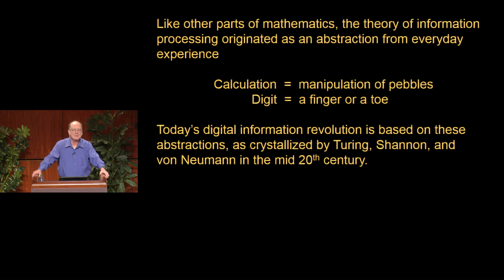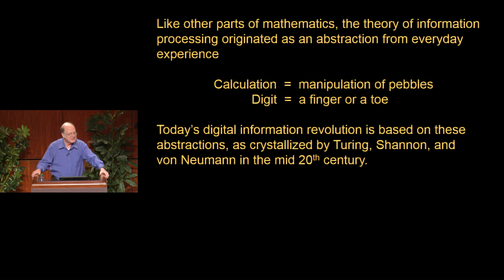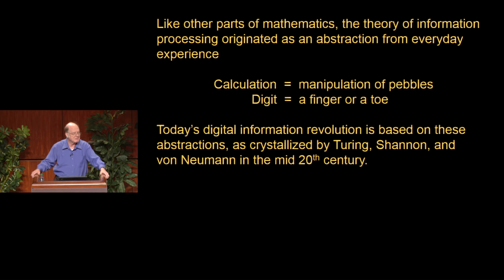I'm going to tell you today about how some things discovered by physicists in the early 20th century have changed our view of the fundamental nature of information, which is at the heart of the information revolution that got going at the end of the 20th century. Like other parts of mathematics, the theory of information and information processing originated as an abstraction from everyday life.